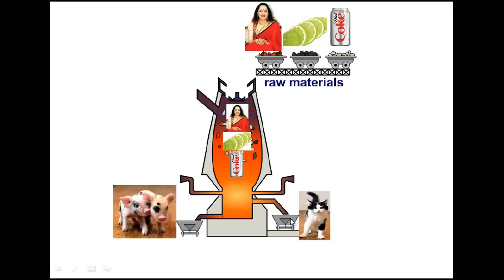Close your eyes and visualize the entire process. See the tall blast furnace — Hema Malini is jumping in for hematite, you are throwing lime for limestone, and a coke bottle for coke. Visualize the hot red flames inside, the molten iron sinking to the bottom, and calcium silicate collected above it. Pigs are collecting molten iron from the bottom, and a silly cat is collecting calcium silicate on the other side.